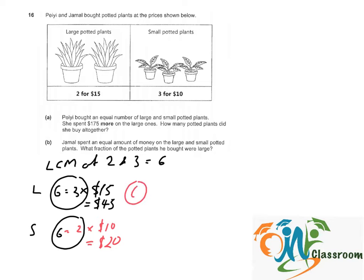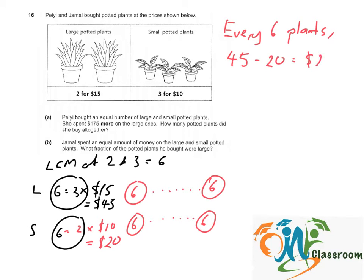She would have bought a multiple of 6 plants, but we don't know how many plants she has bought. For every 6 plants that she bought, the price difference would be $45 minus $20, which is a price difference of $25.